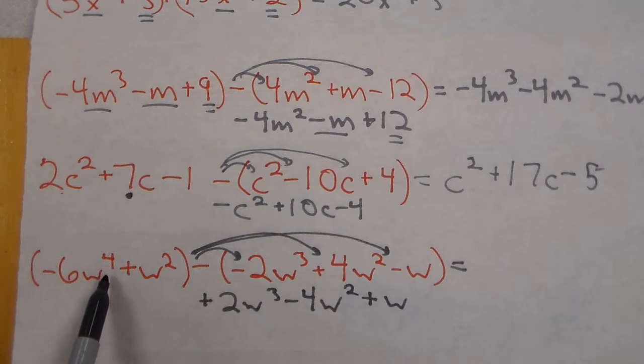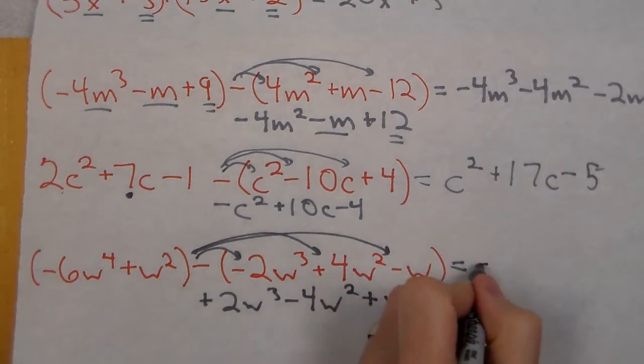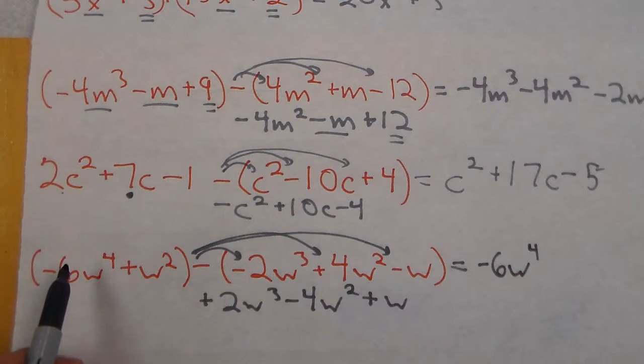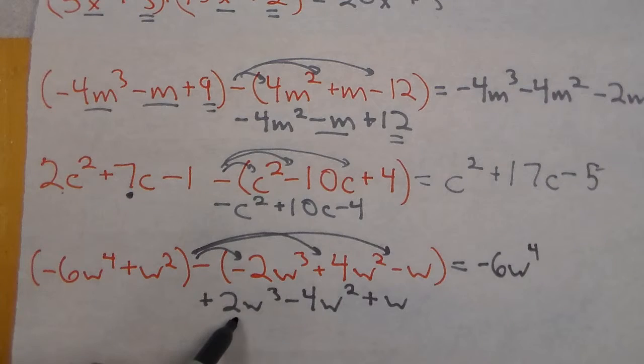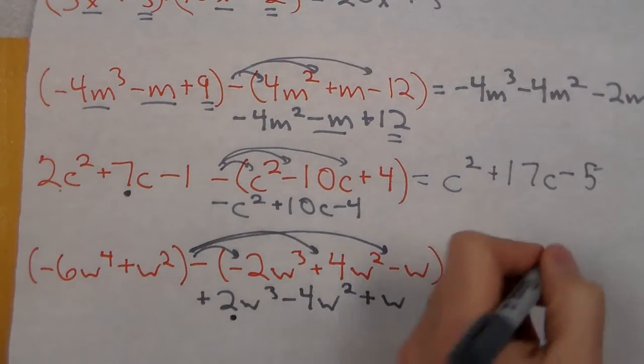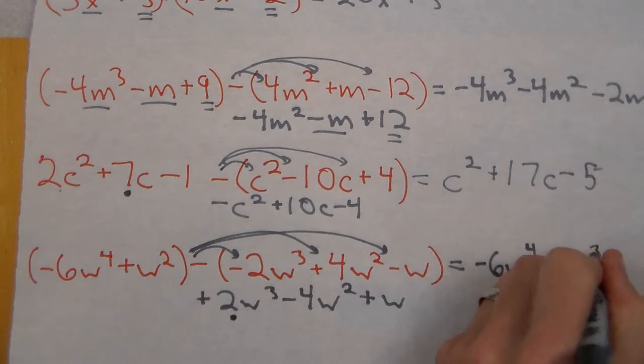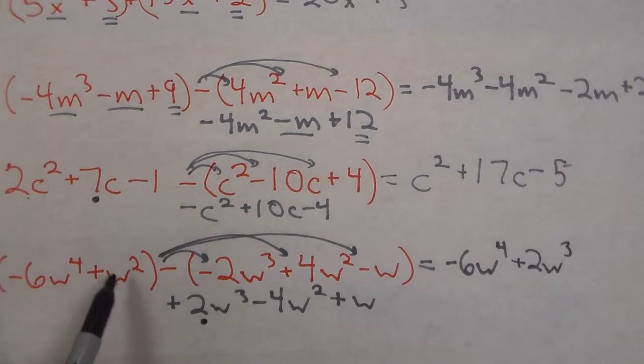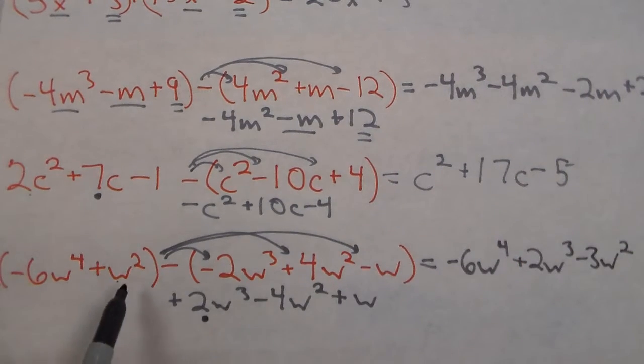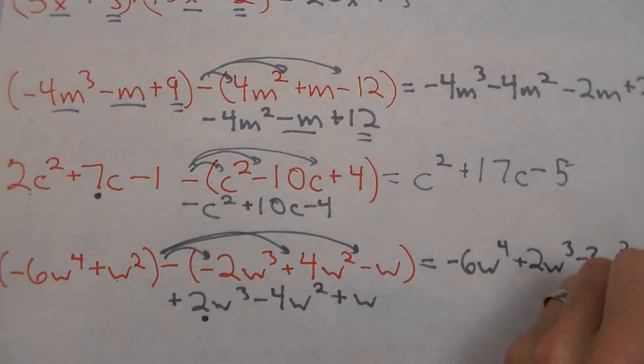I only have one w⁴ so that will remain as negative 6w. W³ is the next highest degree even though w² is here. This one needs to be accounted for. So that's going to be plus 2w³. For our w squareds I have this one and this one. That's a 1 and a negative 4 which is negative 3. And the last one is the w on the end so we're at plus w.